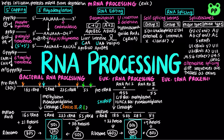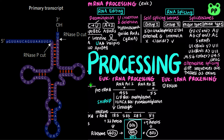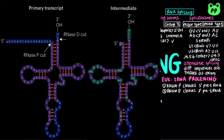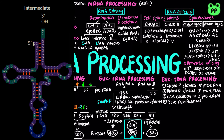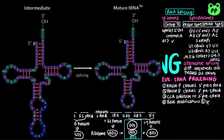During eukaryotic transfer RNA processing, RNase P endonuclease cleaves the 5' end of pre-tRNA, whereas RNase D exonuclease cleaves the 3' end of pre-tRNA. tRNA nucleotidyl transferase adds the trinucleotide CCA to the 3' end of pre-tRNA. Specific bases undergo base modification, including methylation, deamination, and pseudouridylation, and finally, some introns are spliced out, producing the mature tRNA, which carries a specific amino acid during translation.